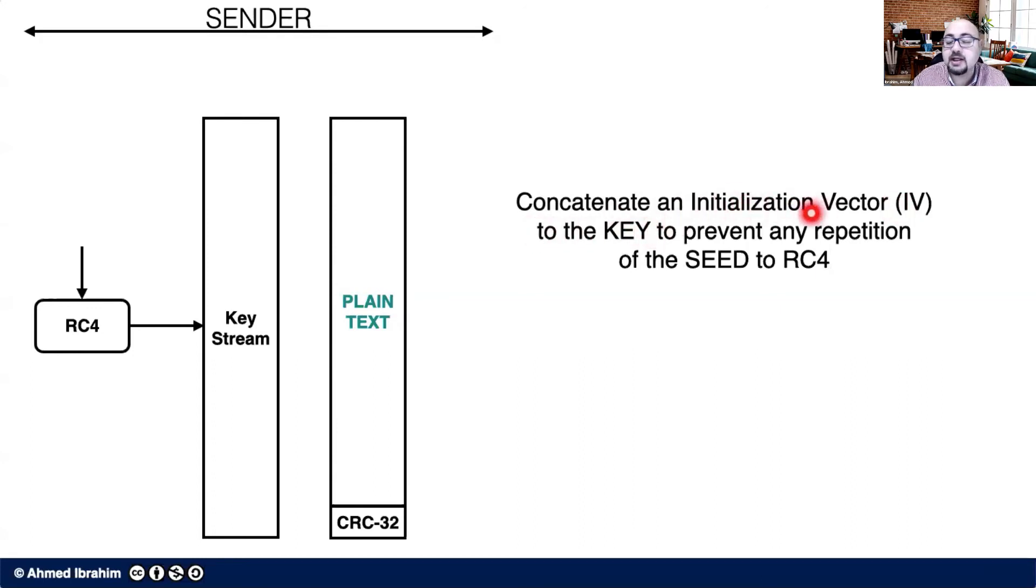And this initialization vector should be random every time to prevent any repetition of the seed that we use to RC4 such that the key stream is different every time.